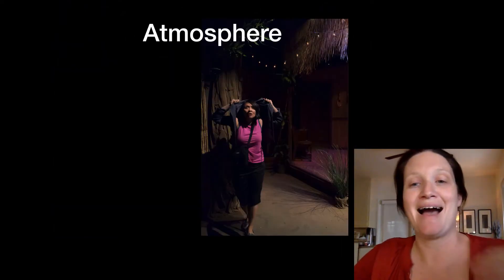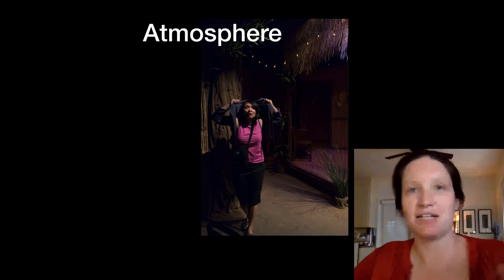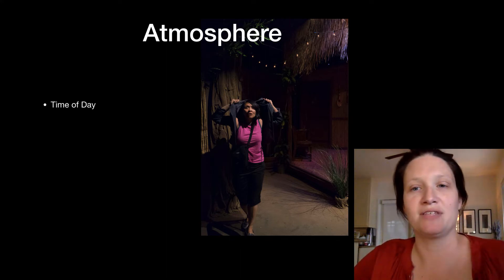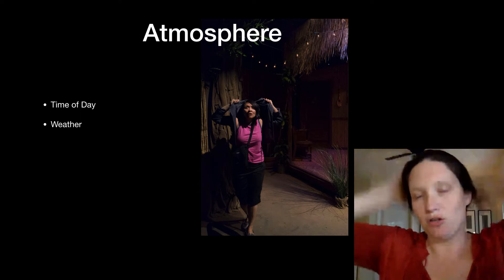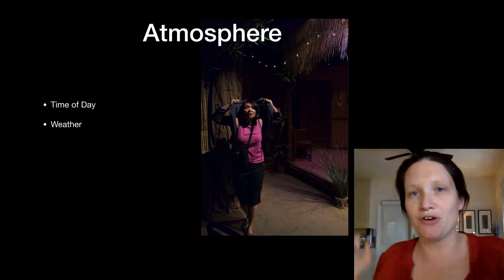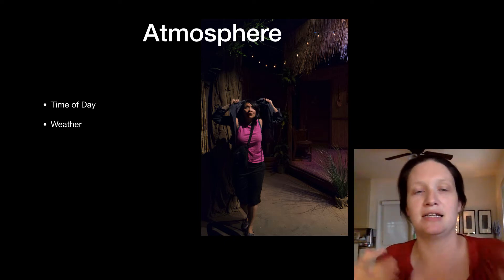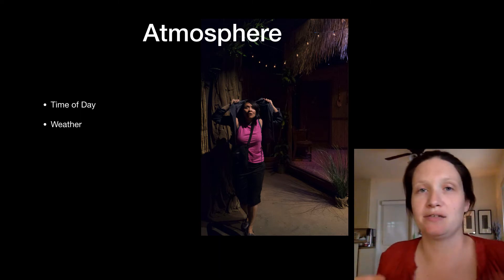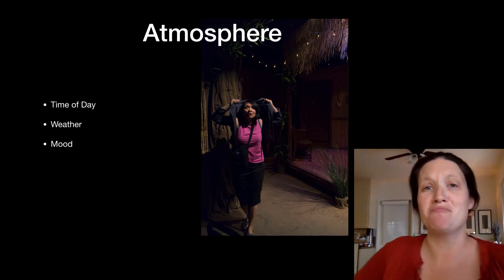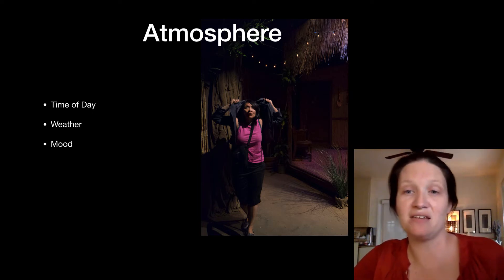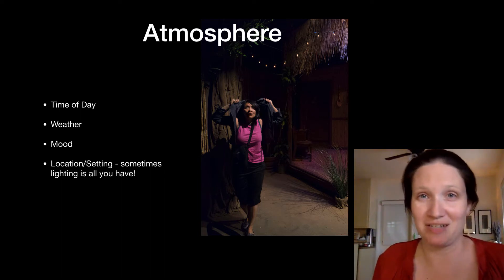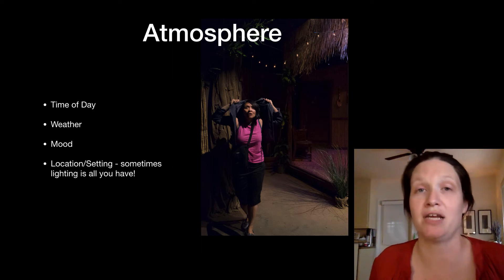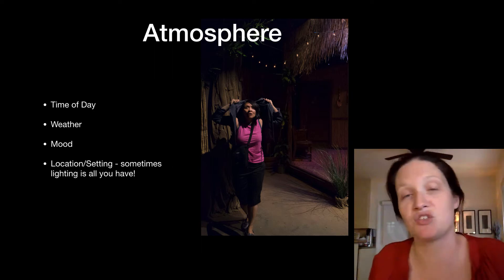Our next function of light is atmosphere. Atmosphere tells us all kinds of things about what the place is and what's going on. It gives us time of day information and talks about weather. In this particular scene, it's supposed to be nighttime, so you have that kind of dim, cool light. The character holding her jacket over her head gives us the sense that it's raining — those things can be indicated by lighting. You can also use atmosphere to talk about mood, and sometimes all you have is lighting to convey a location or setting. That happens a lot in dance, because your dance projects often won't have scenery to tell us what the feeling of the space is.